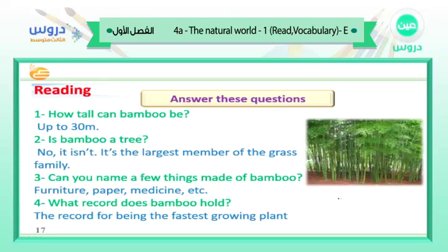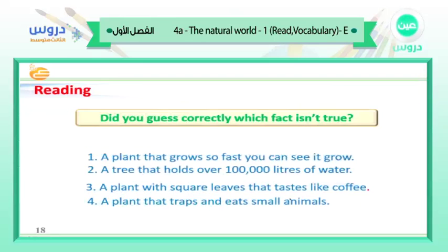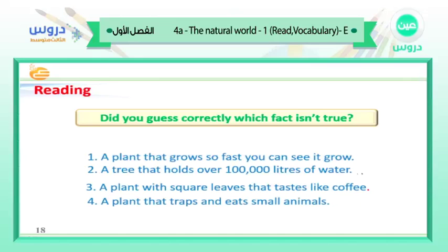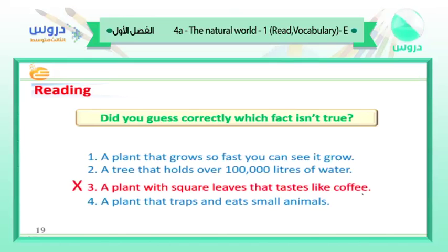Did you guess correctly — which fact isn't true? Is it: a plant that grows so fast you can see it grow; a tree that holds over one hundred thousand liters of water; a plant with square leaves that taste like coffee; or a plant that traps and eats small animals? Of course number three — a plant with square leaves that taste like coffee — that's the one that isn't true.